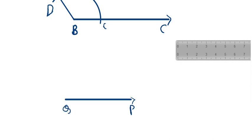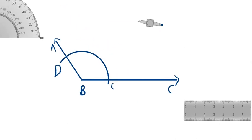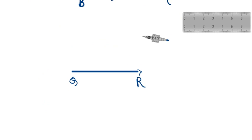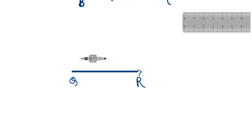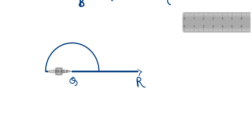Now we take the compass — without changing the radius — and place its center at point Q. With the same radius, we draw an arc across the line QR.